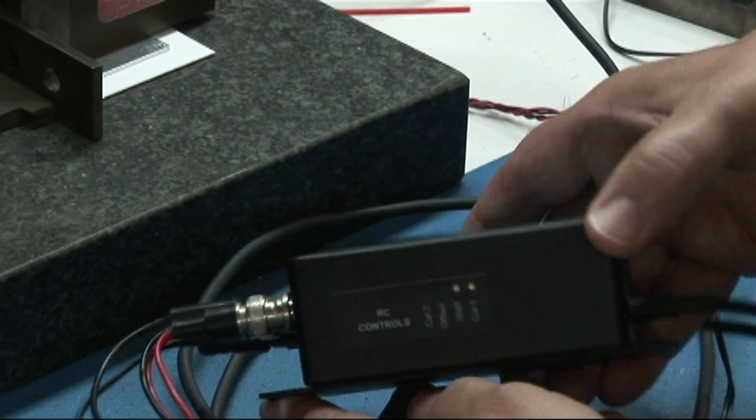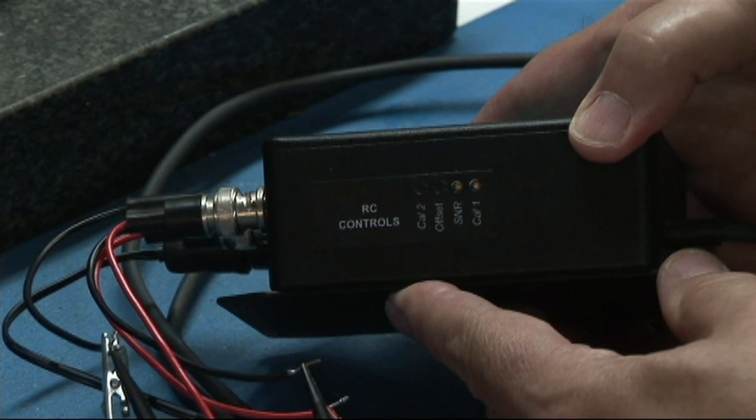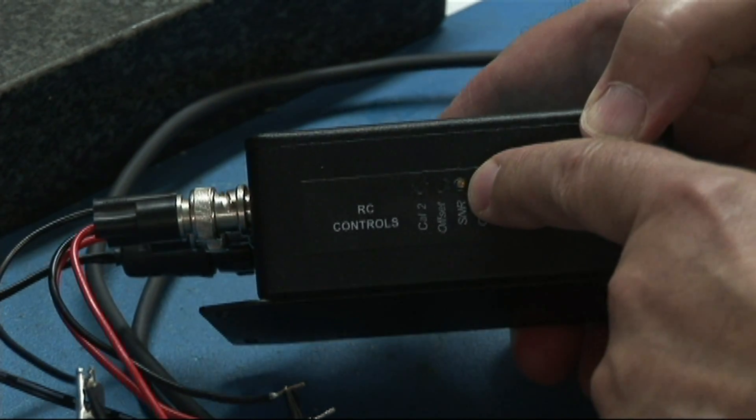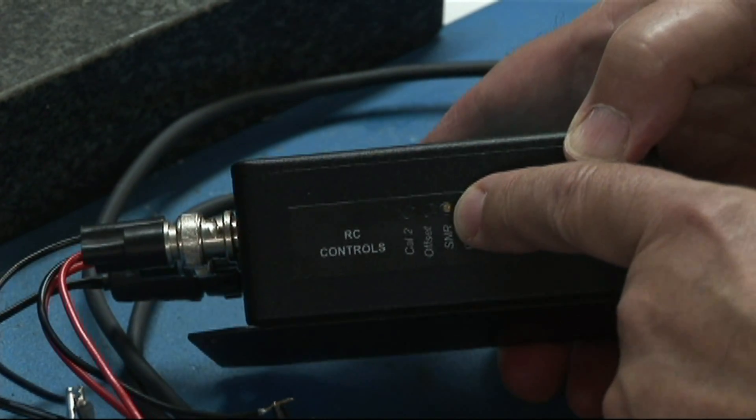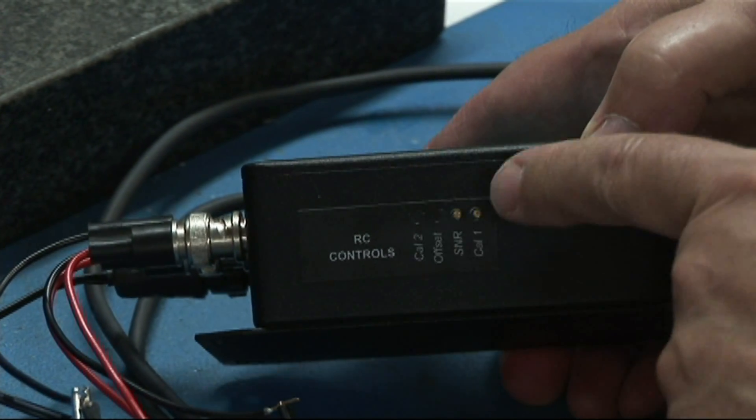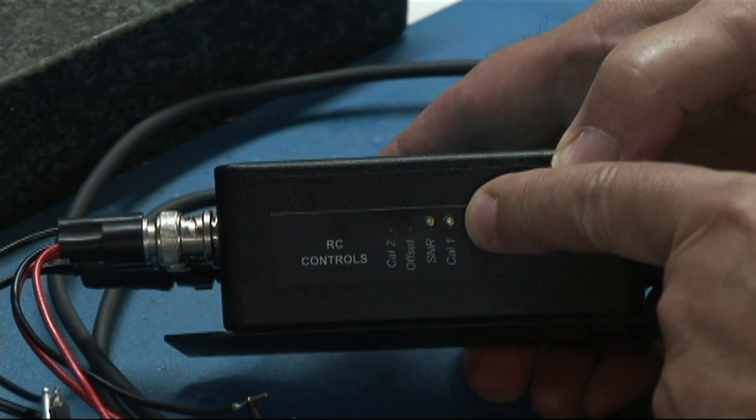On the side of the amplifier, you see the RC controls, and there's a separate control for that SNR voltage, and a separate control for the output, which we call CAL1.